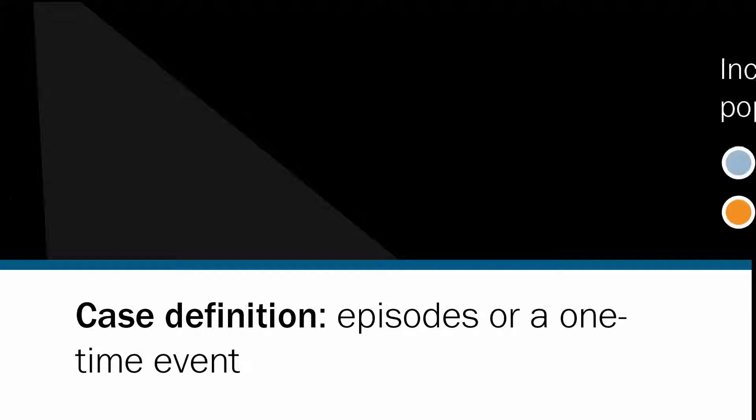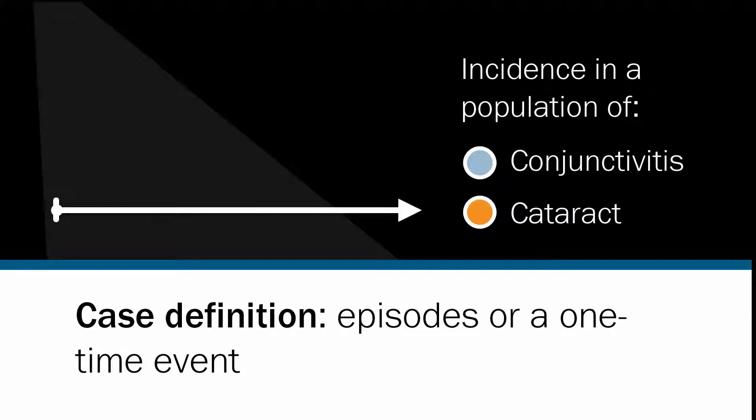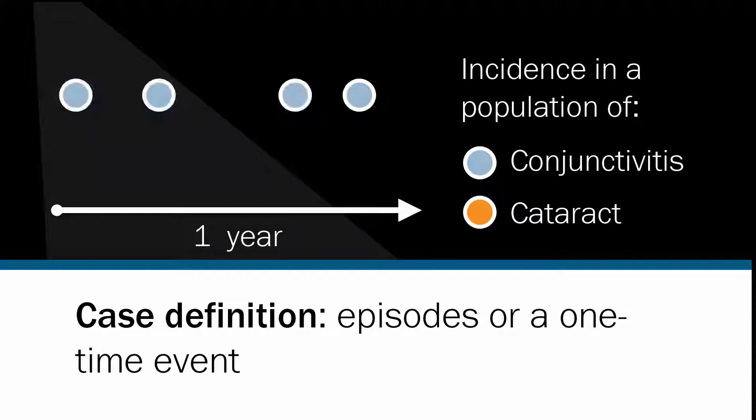As an example, we could look at the number of diabetics that develop diabetic retinopathy over one year. You would take 200 diabetics, examine them on the 1st of January when they do not have diabetic retinopathy, and then on the 31st of December see how many developed it. Case definition is very important in incidence, as it can refer to episodes of a disease or a one-time event. For example, a person may contract and be cured of conjunctivitis several times over a year, contributing several times to the number of cases, whereas one person can only have one cataract in each eye.